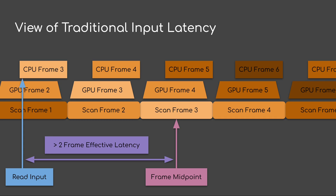On the third line we have the scan out — this is when you actually see the frame. If we're doing scan and hold, I like to use the frame midpoint of scan out as the perceptual midpoint of the latency. So if we look at between read input and the frame midpoint, if we tighten up the frame bounds we're going to say be around two frames of effective latency.